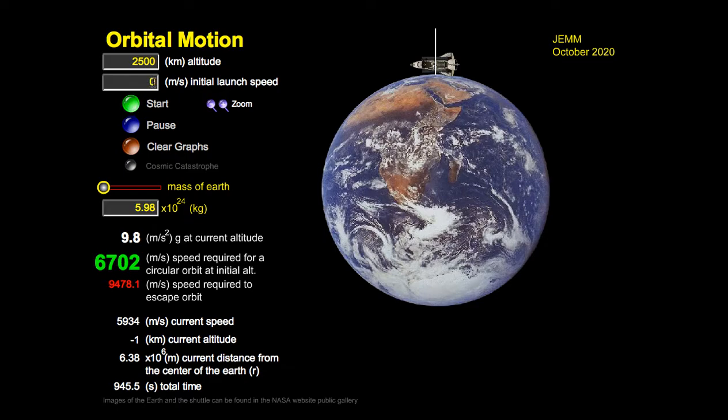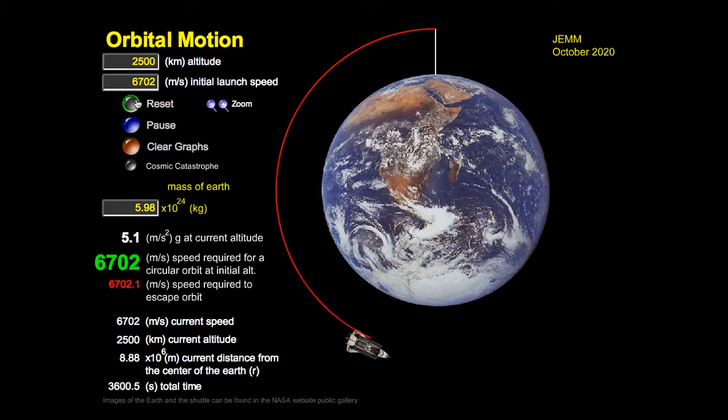So now let's take a look at this simulation. Notice there's a big green number here in the middle of the screen. It says 6,702. Let's dial in that number and see what happens. So we'll press the start button.